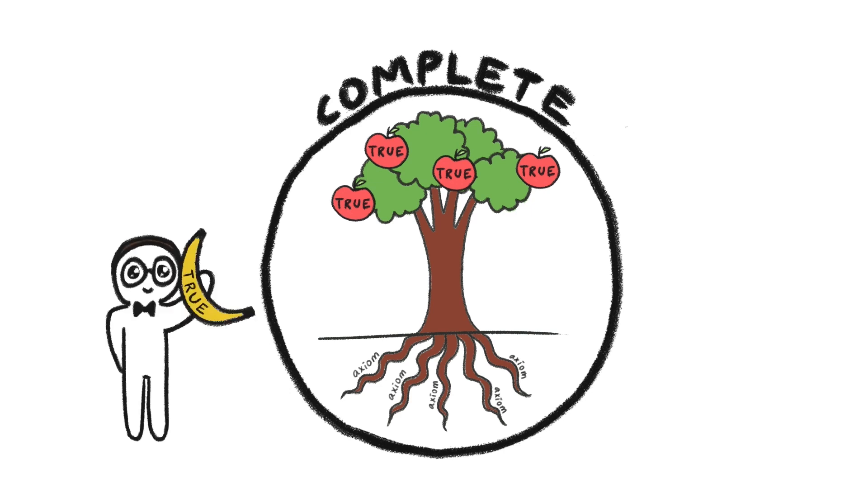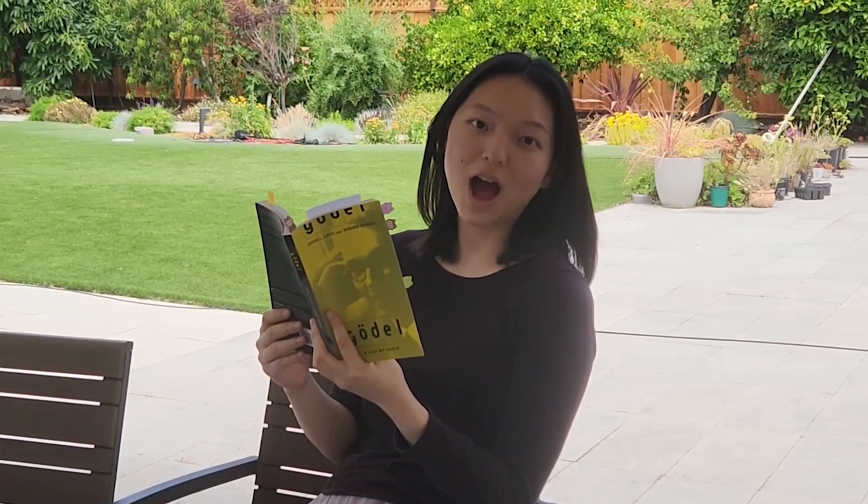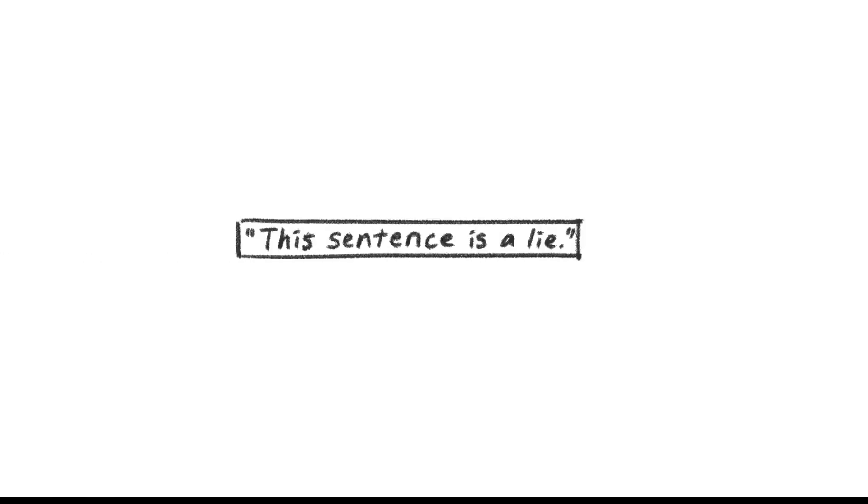But Gödel found a true statement that could not be proven. So how did he do this? Let's look back at our paradox. The key is that the sentence refers to itself.